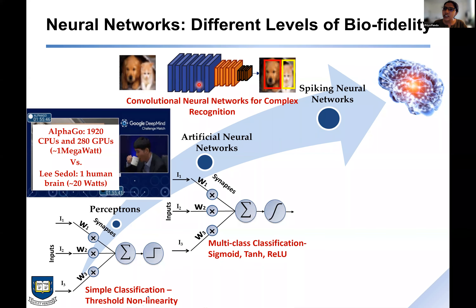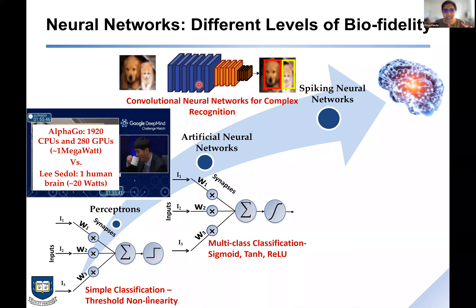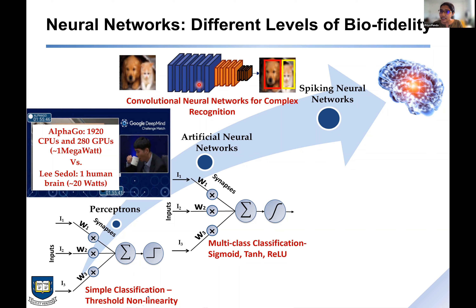But one question to ask is: when AlphaGo played against Lee Sedol, what resources was AlphaGo expending? AlphaGo ran on around 2000 CPUs and 300 GPUs, consuming on the order of one megawatt of power. Lee Sedol's brain — an average human brain — expends 20 watts, and that brain wasn't just playing Go: it was understanding how to make moves, drinking coffee, and doing a variety of tasks simultaneously.